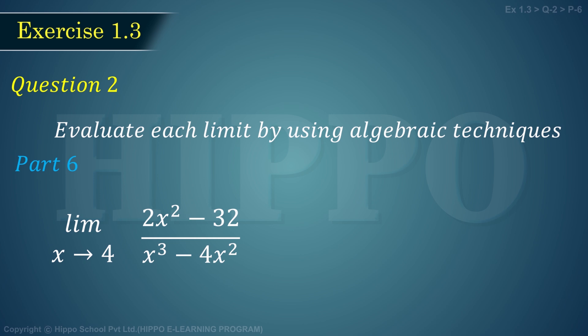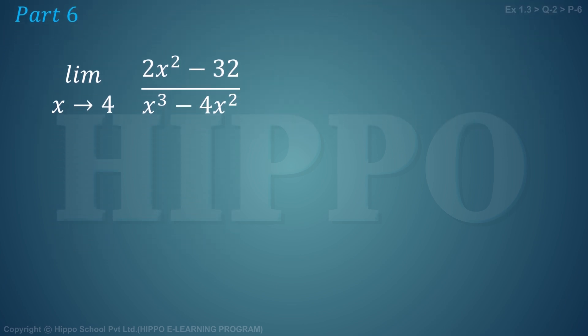2x² minus 32 divided by x³ minus 4x². If we put our direct limits, it will become 0/0 form, so we have to do some simplifications.